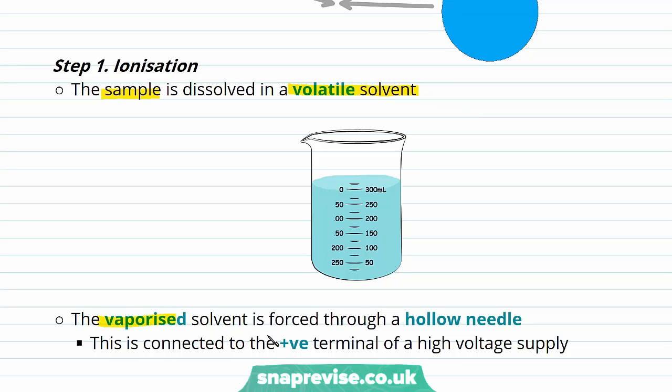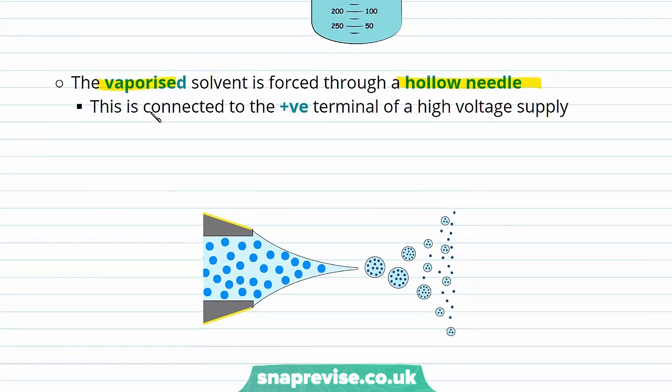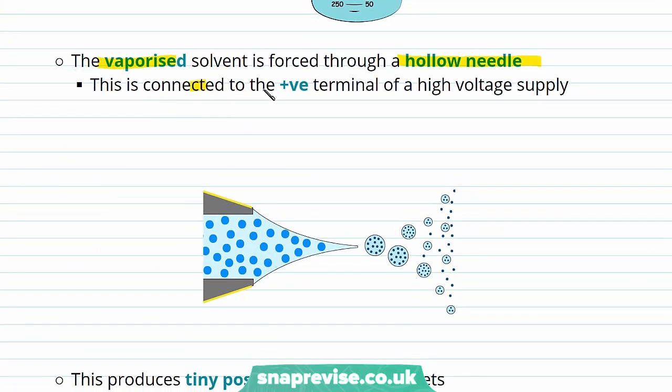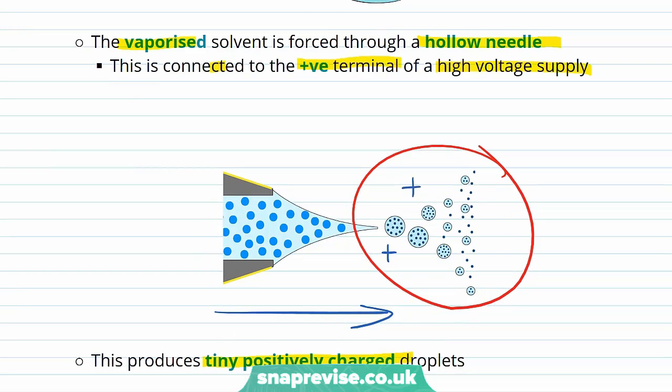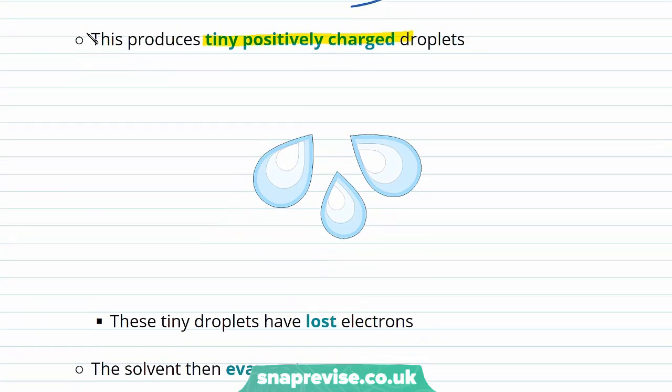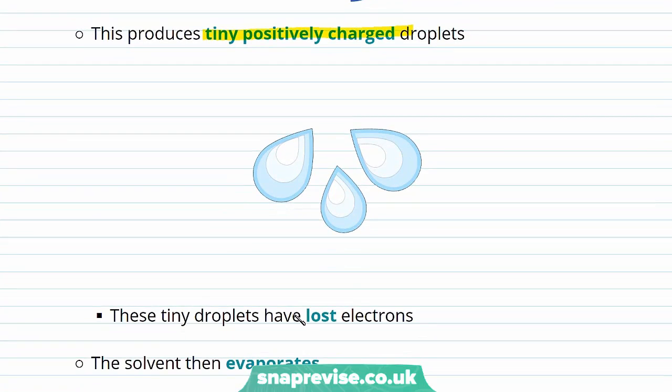And the vaporized solvent is forced through a hollow needle. This hollow needle is connected to the positive terminal of a high voltage supply. As the solvent is forced out of this needle, we form these tiny positively charged droplets that you can see here. The positive charge of this terminal causes our tiny droplets to lose electrons.